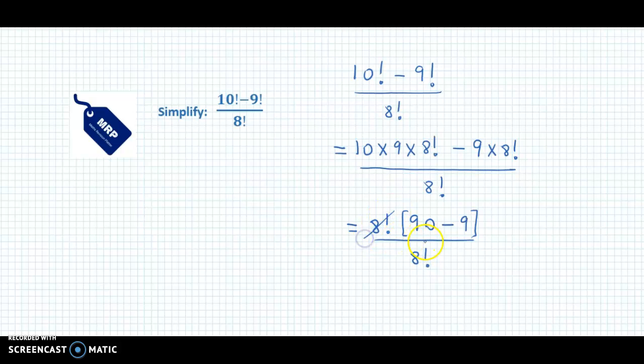So we could cross out 8 factorial, and 90 minus 9, so the final answer is 81.